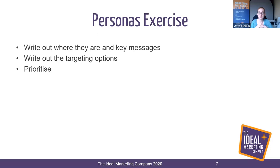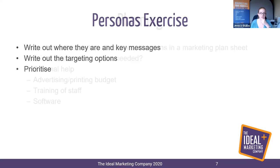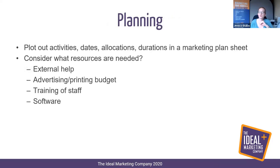Persona priorities can change over time and evolve. Particularly at the moment with COVID-19, priorities may be different — a particular industry that has had to stall may no longer be your priority because they honestly can't make any decisions and haven't got the budget. It's also helpful in the persona exercise to add extra fields specific to the current circumstances: how are they affected, and is there a particular way you can help them respond to what's going on right now?